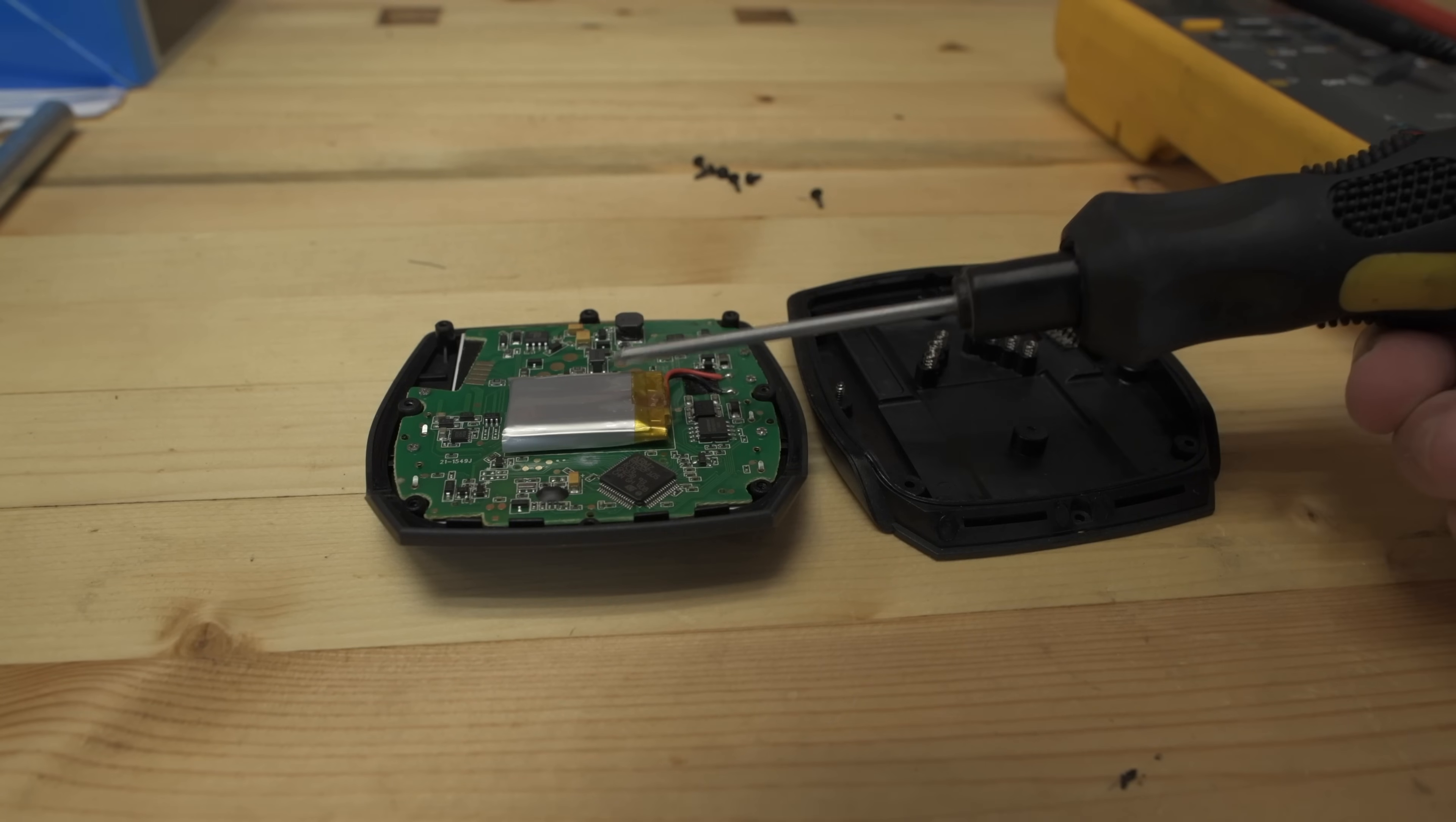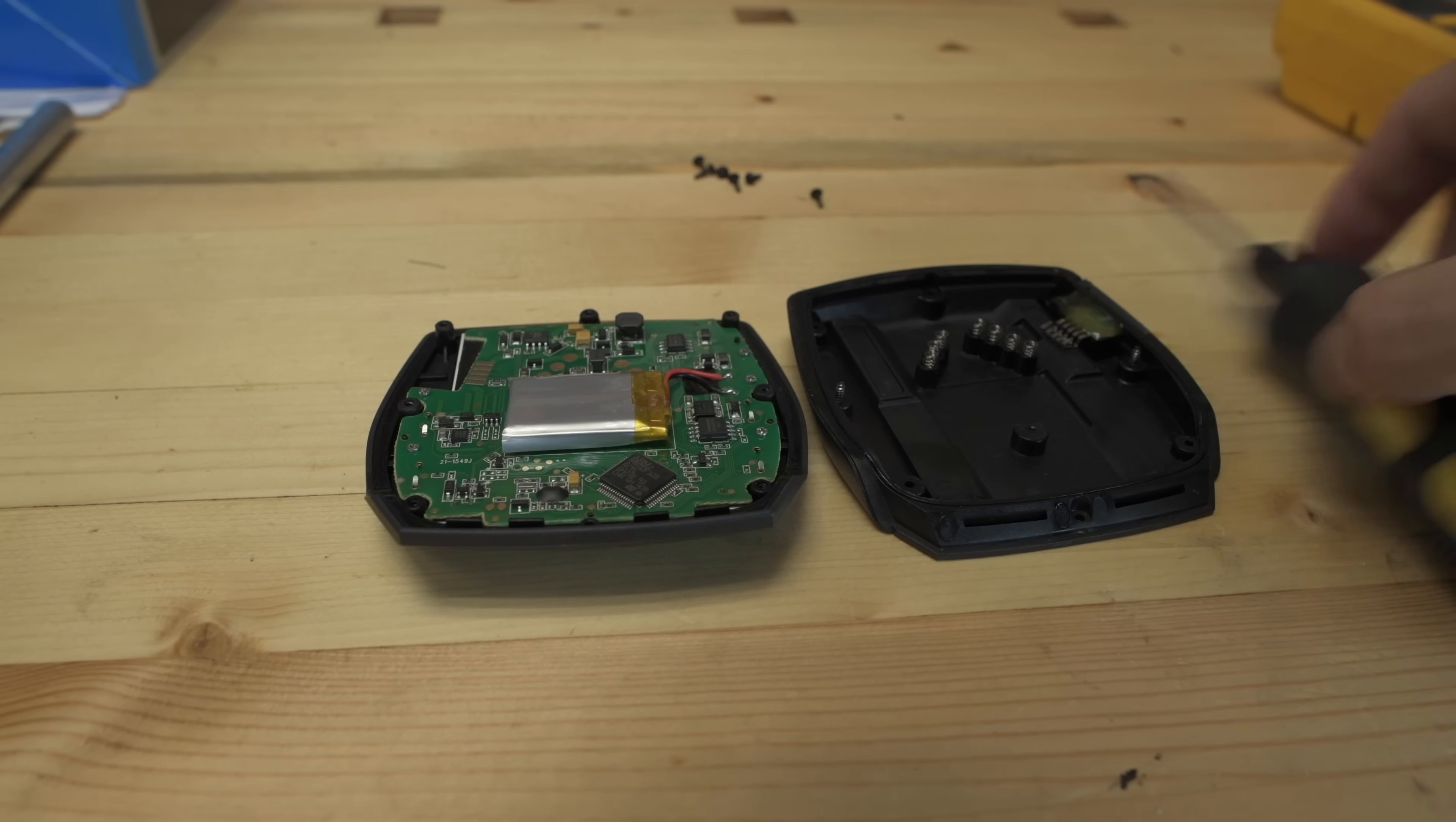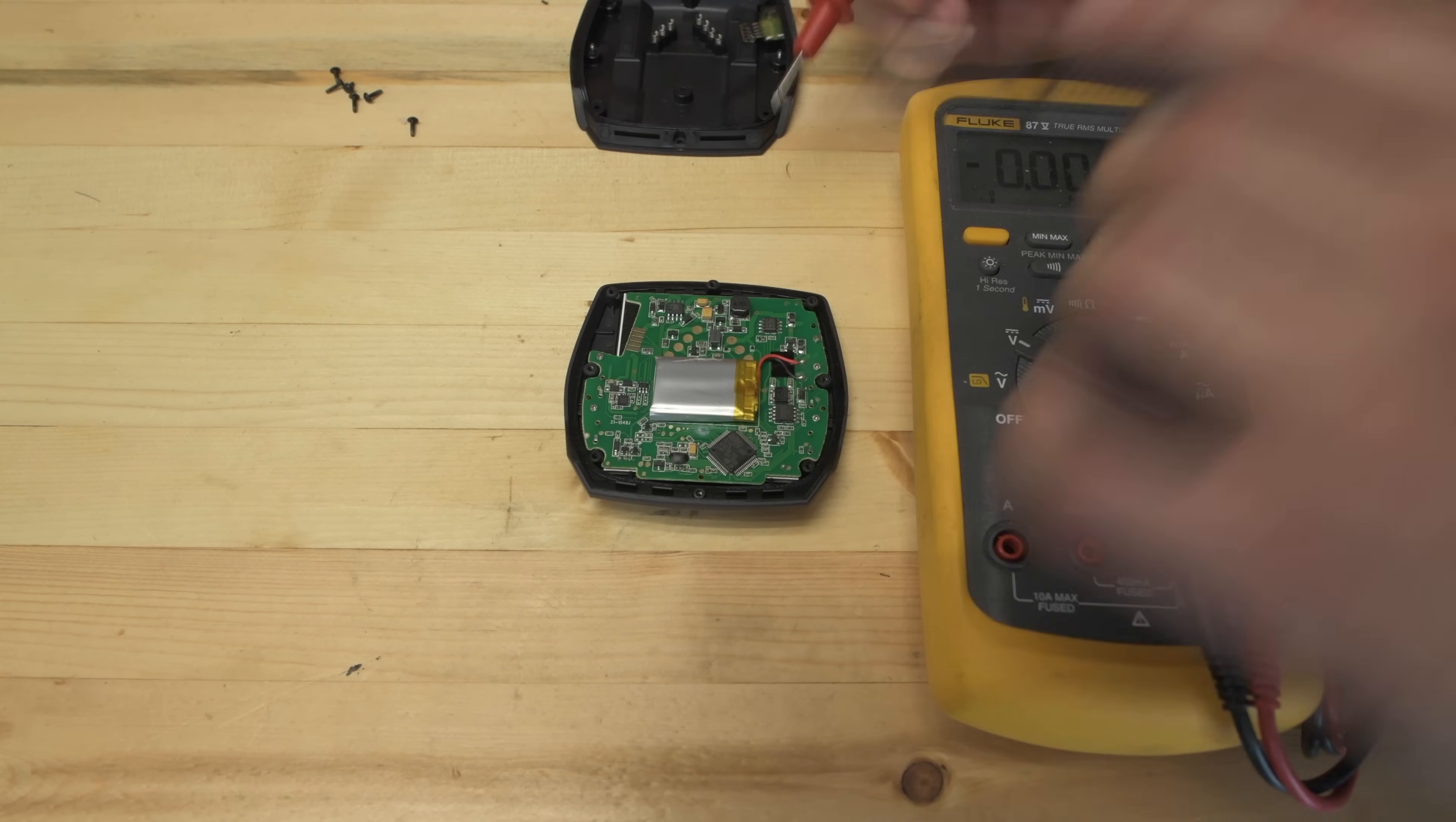So at this point you can see the lithium ion battery. Don't short these two contacts. It is most likely live even if it's dead. There's probably still a little bit of voltage in there. Speaking of voltage, let's go ahead and use a multimeter to test this and confirm that this is indeed the issue that we're having, that the battery is dead.